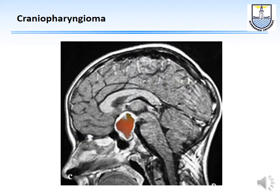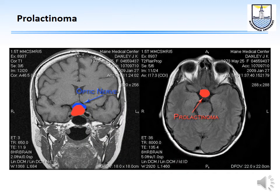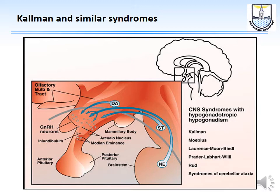At the hypothalamic-pituitary level, a craniopharyngioma can destroy the pituitary, preventing FSH and LH production needed to stimulate spermatozoa production. A prolactinoma can inhibit FSH and LH production by pressure and direct inhibition. Kallmann syndrome — characterized by poor GnRH formation and associated with anosmia — and similar syndromes such as Möbius syndrome and Laurence-Moon-Biedl syndrome also affect sperm production.